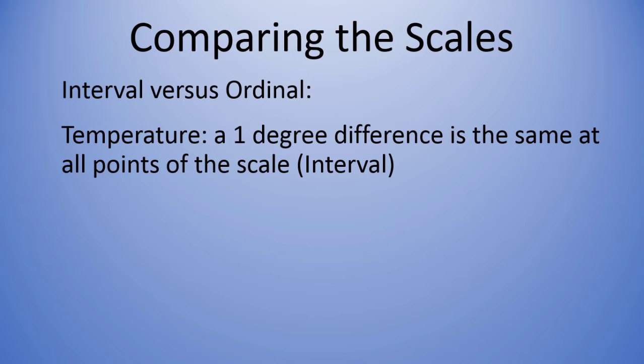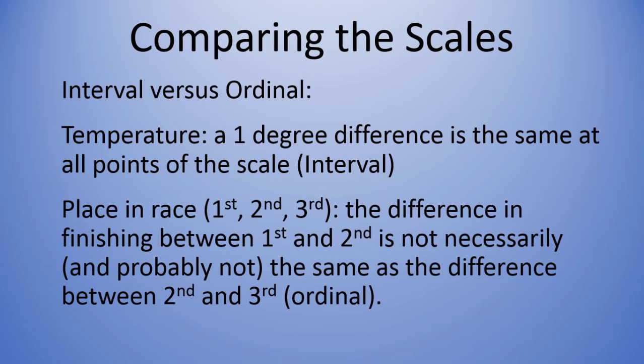In that example, a one degree difference is the same at all points of the scale. That was our example of interval. Then for ordinal, we had the place in the race: first, second, and third. The difference in finishing between first and second now, for ordinal, is not necessarily, and probably is not, the same as the difference between second and third.